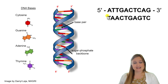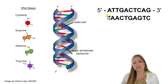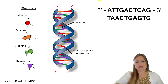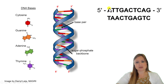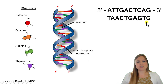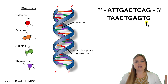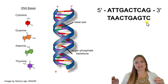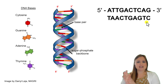So the other strand's sequence is: T, A, A, C, T, G, A, G, T, C. That's the sequence of bases in the nucleotides of the complementary strand. You can test yourself by coming up with random arrangements of bases on one strand and then determining the complementary bases on the other strand.